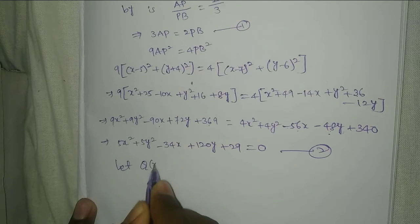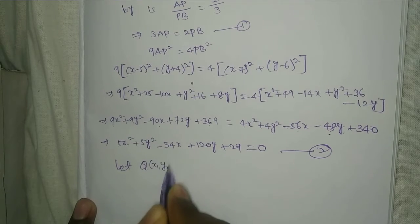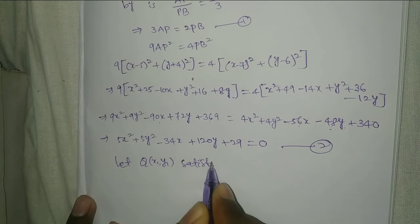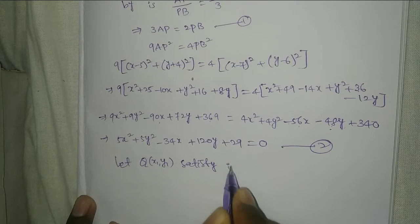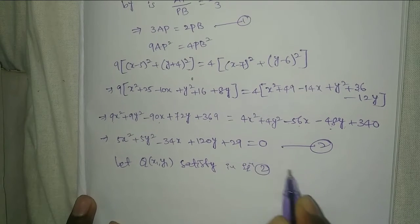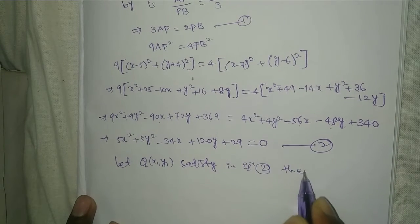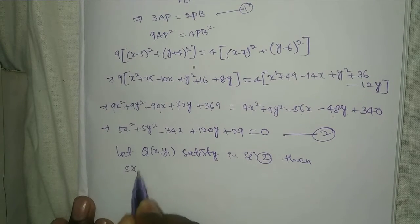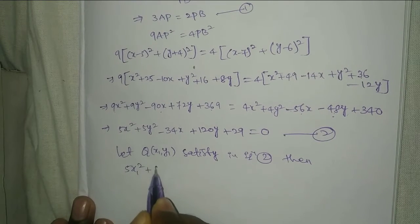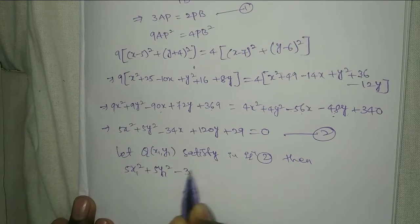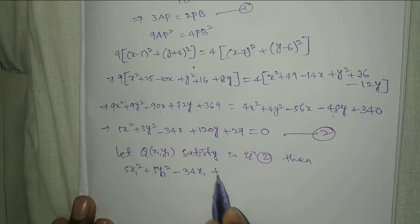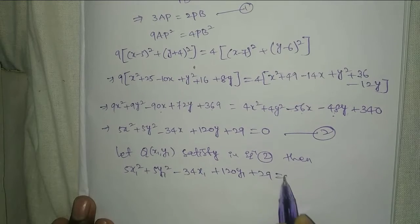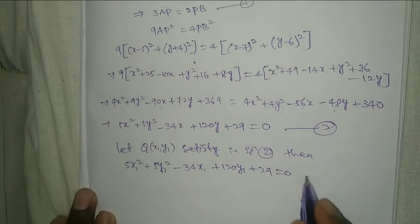Let Q(x1, y1) satisfy equation 2. Then substituting x replaced by x1, y replaced by y1: 5x1² + 5y1² - 34x1 + 120y1 + 29 = 0. This is equation number 3.